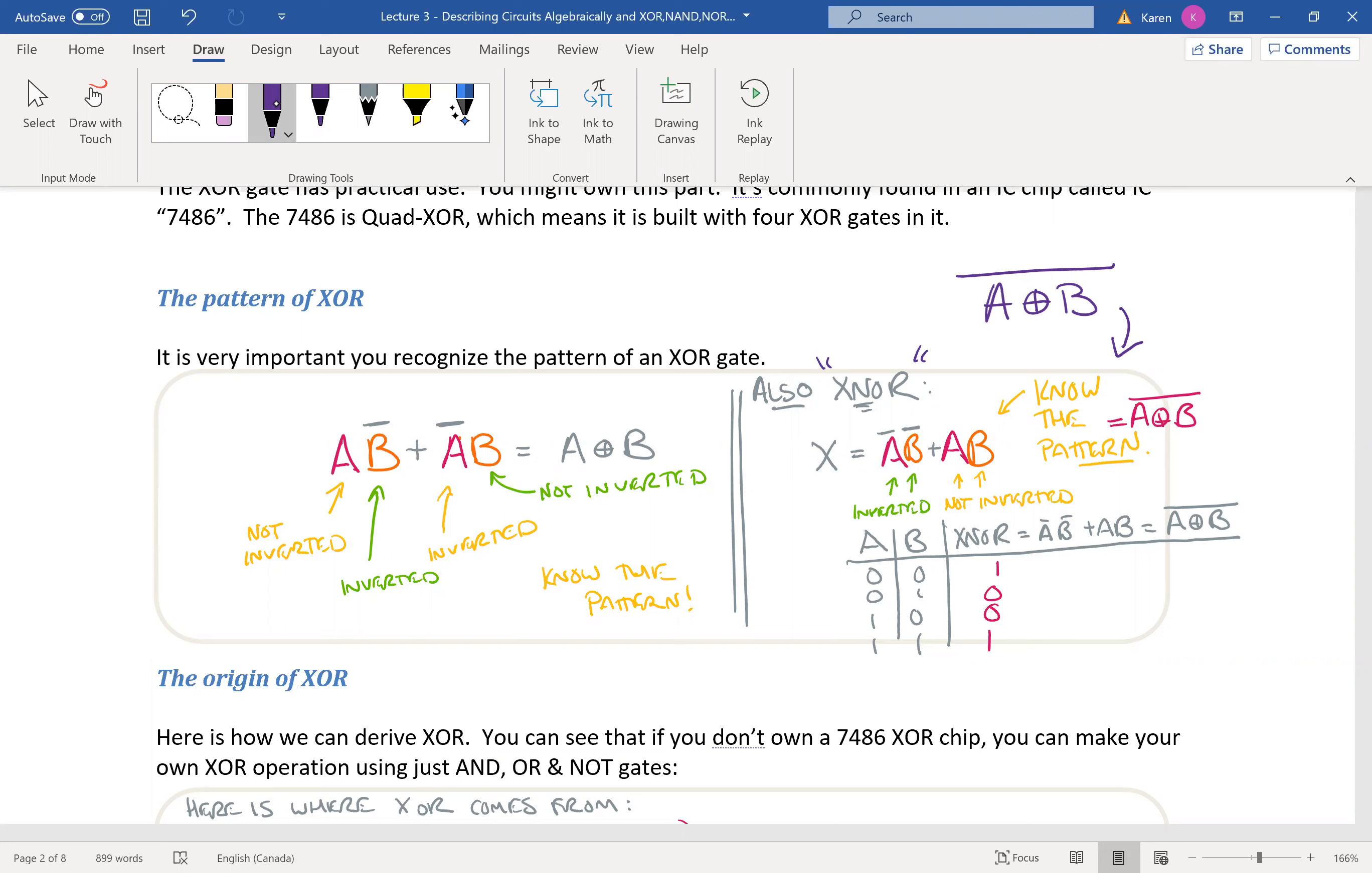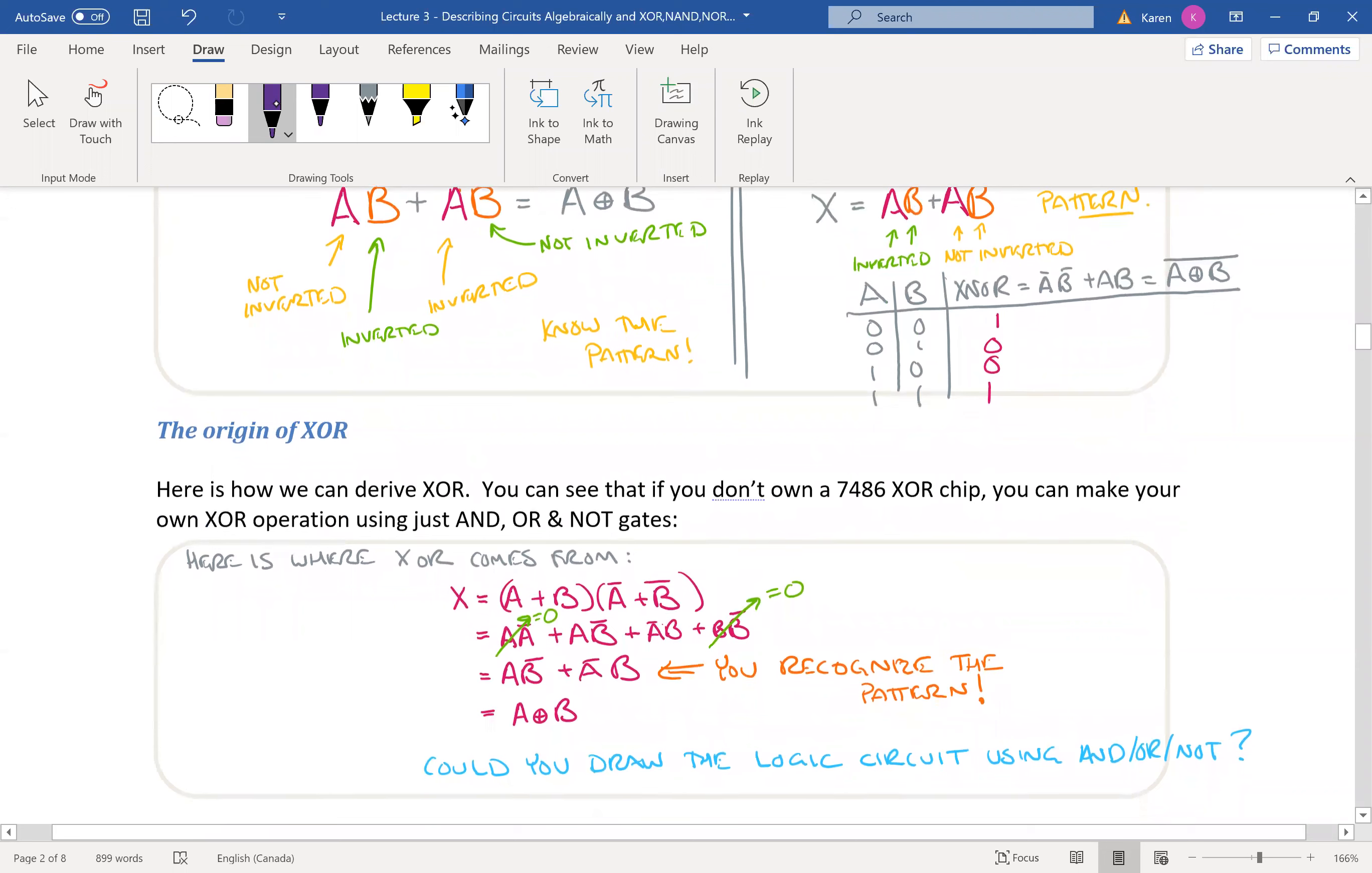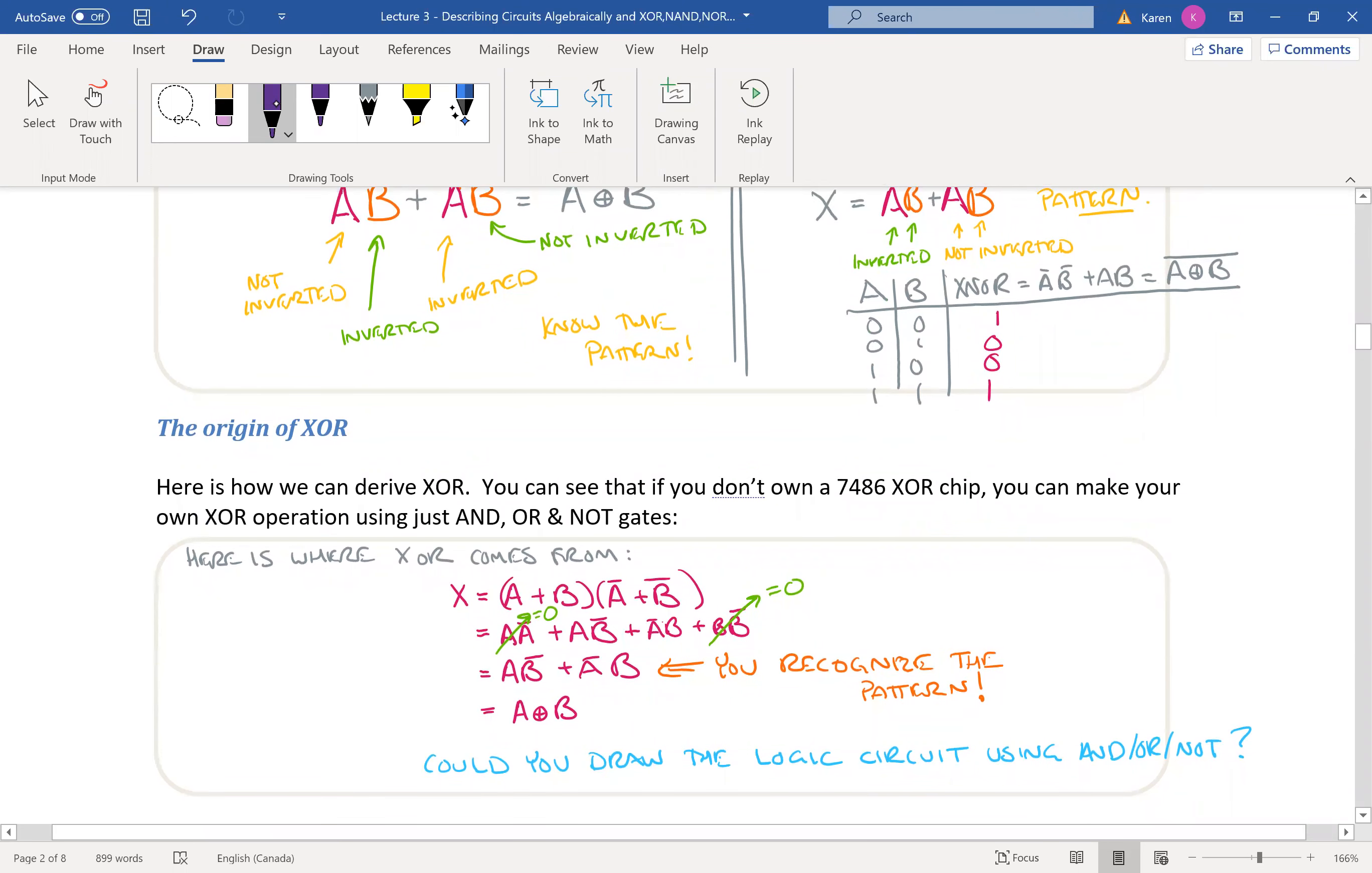the factors in the second term are not inverted. So you really need to know the pattern of the exclusive OR. Now exclusive OR and exclusive NOR are not new gates. All they are is a popular combination of your basic gates. So this is A ORed with B. This is an inverse of A ORed with B.